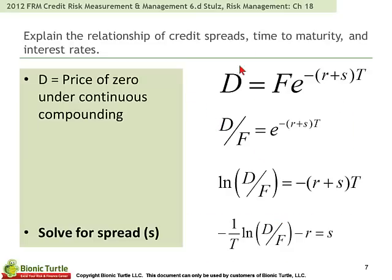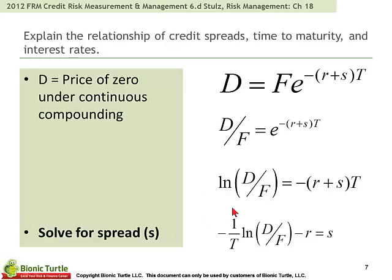Stoll uses a simple formula to derive the spread on a credit — we can think about a bond. This is useful to me not because it's realistic; I do not think it's realistic, and much of Stoll's is not realistic. It's useful rather because it gives us a chance to exercise a basic building block, that is to say, continuous discounting. The formula in Stoll's is here at the bottom, and I think it's instructive for us to be able to derive it.